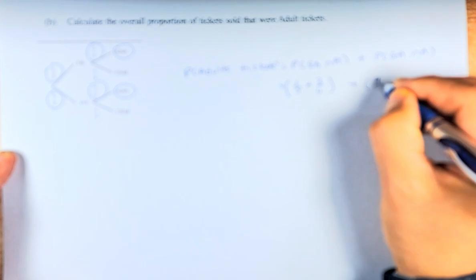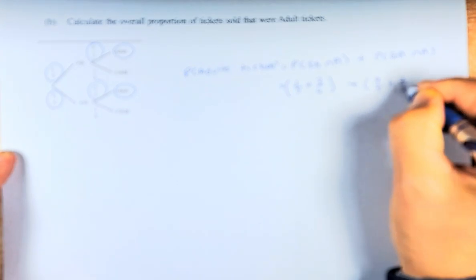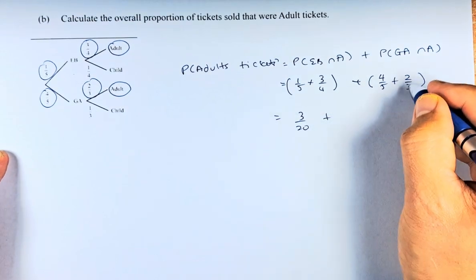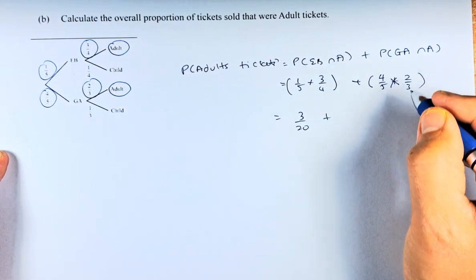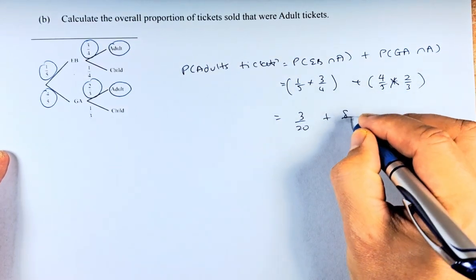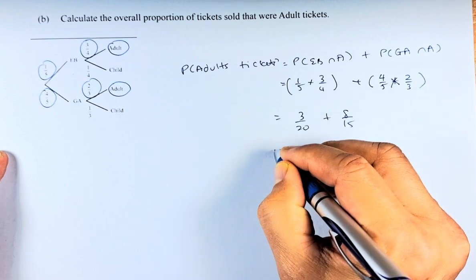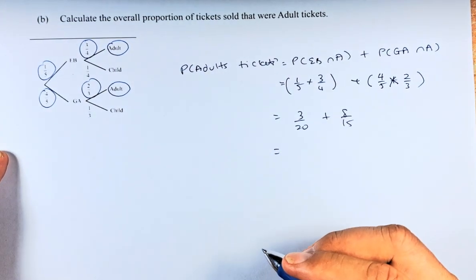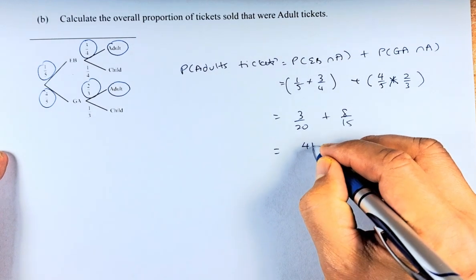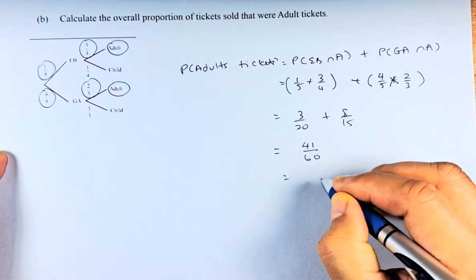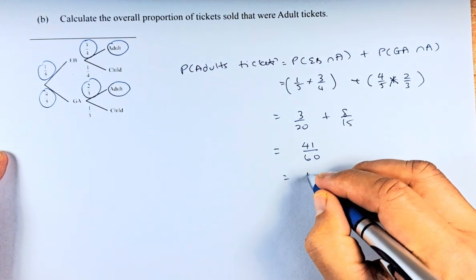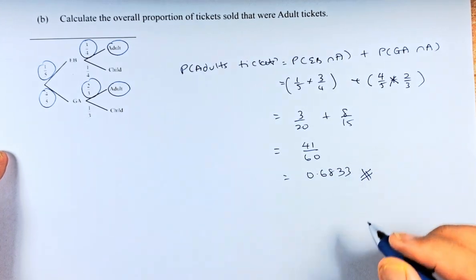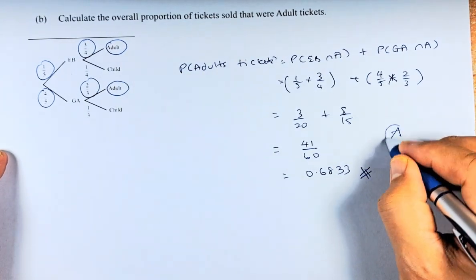Then to get general admission and adult it is four-fifths times two-thirds. So it is three-over-twenty plus eight-over-fifteen. Put that in your calculator and that should be 41-over-60. In decimal that is approximately 0.6833. If you can get that answer, you will get another Achievement.